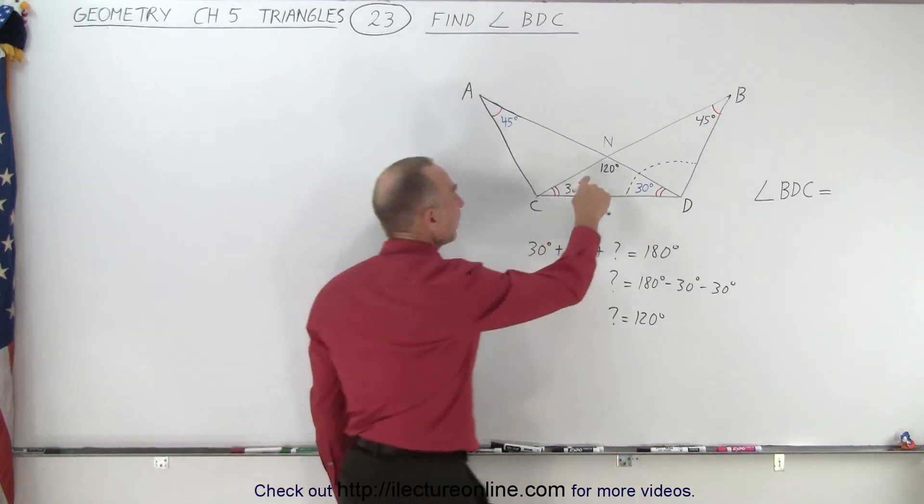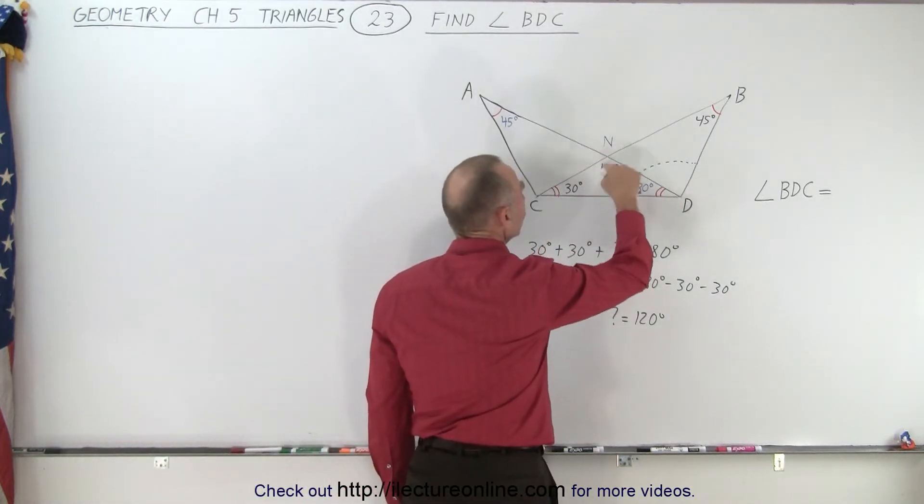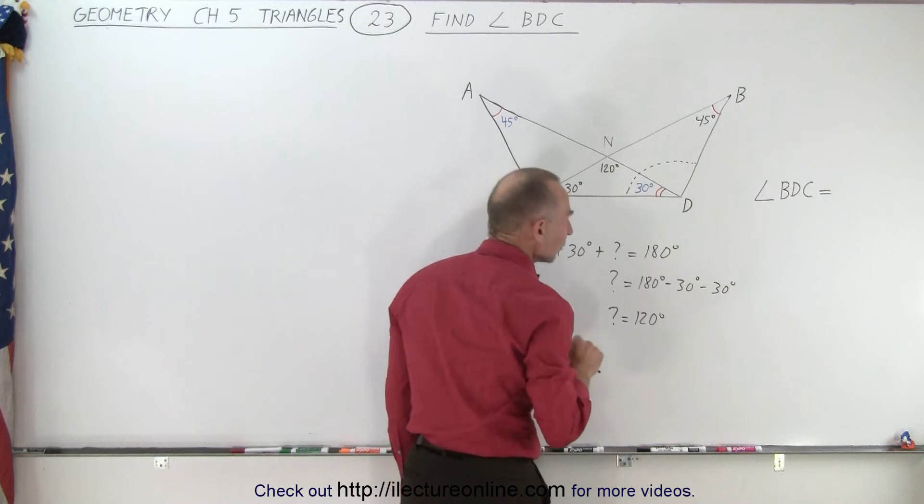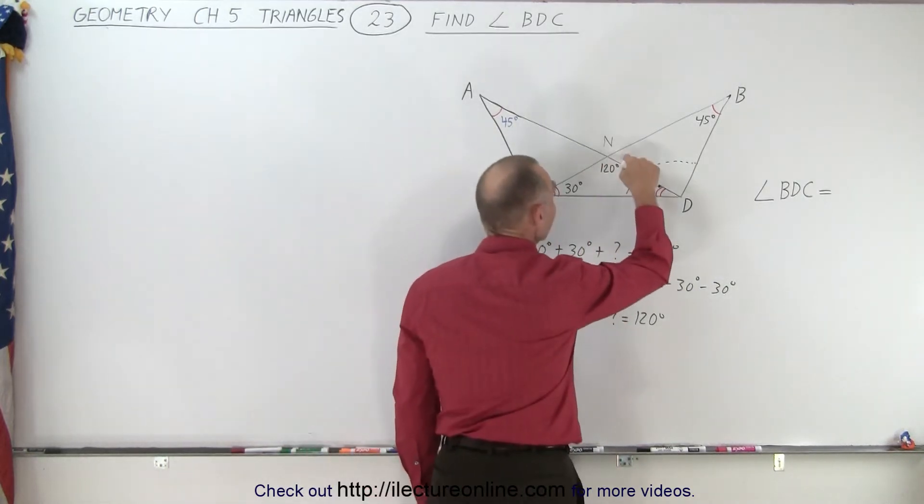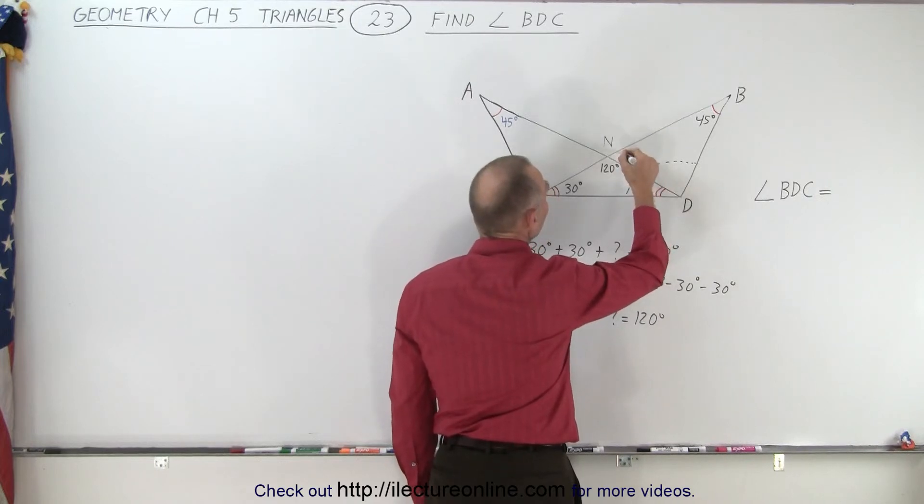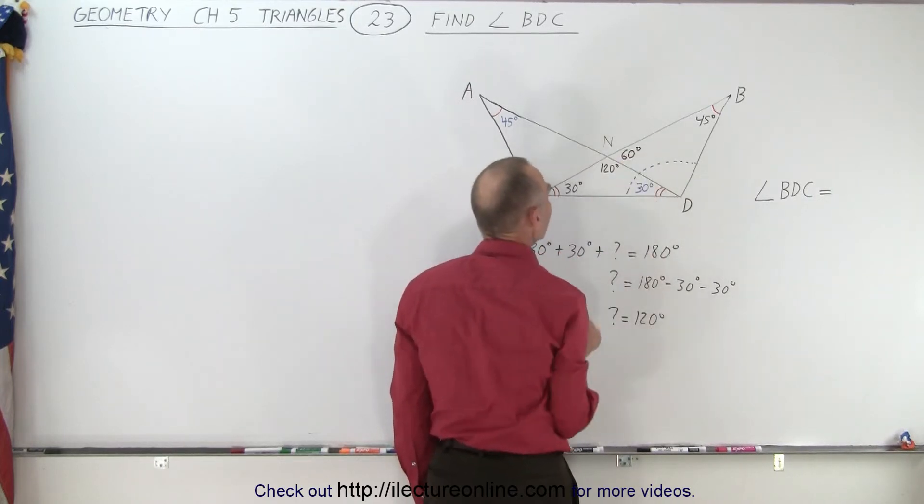Now notice that this angle plus this angle are two supplementary angles. And supplementary angles add up to 180 degrees. So 120 plus this should be 180. That means this angle must be 60 degrees.